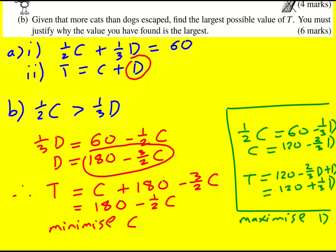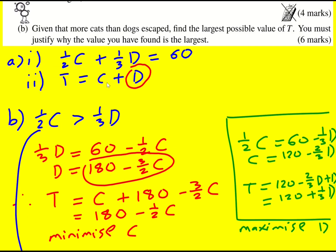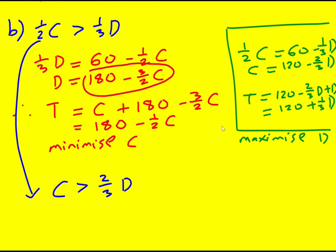It's all going to come down to this condition now. One-half C is greater than one-third D. So that means, bringing this back in, I didn't want to deal with it straight away, I wanted to get this information down, but that means that C is greater than two-thirds D, or three C is greater than two D. Now let's just bring back in this condition: one-half C plus one-third D equals 60.